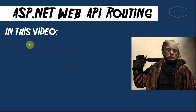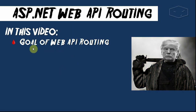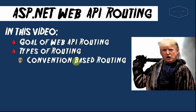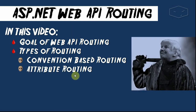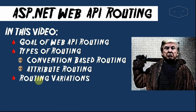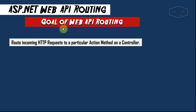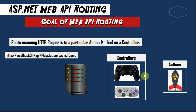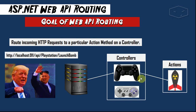Hello and welcome. Here we will see the goal of Web API routing, types of routing — convention-based routing and attribute routing — and finally routing variations. The goal of Web API routing is to route incoming HTTP requests to an action method on a controller. Imagine that we have a server with controllers and actions, and we have this route — this URL.